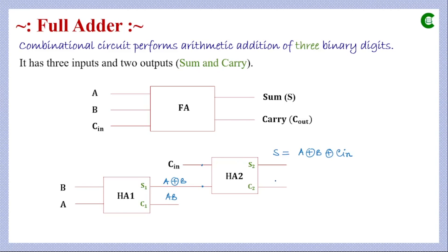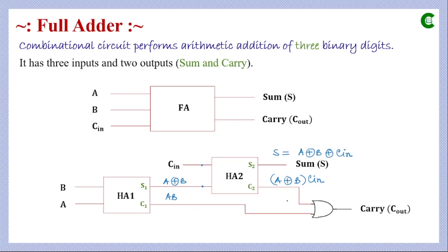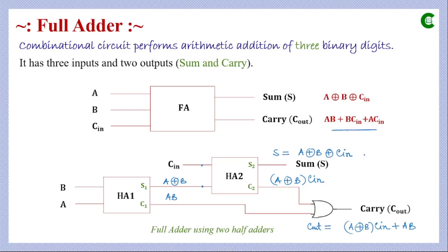The carry output of the second half adder is the AND operation between its two inputs: (A XOR B) AND C-in. To obtain the final carry output of the full adder, we take this output and A·B and pass them through an OR gate. So C-out = (A XOR B)·C-in + A·B.